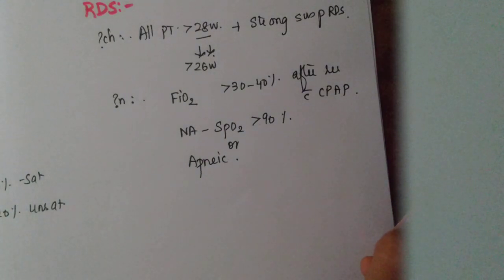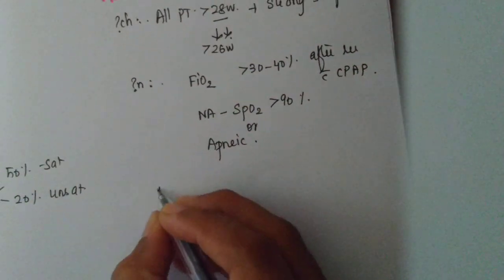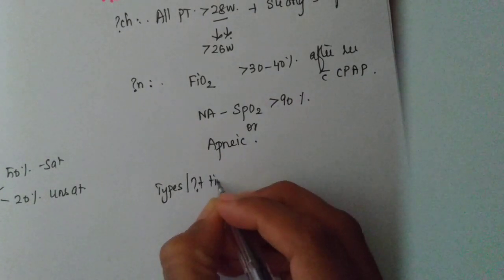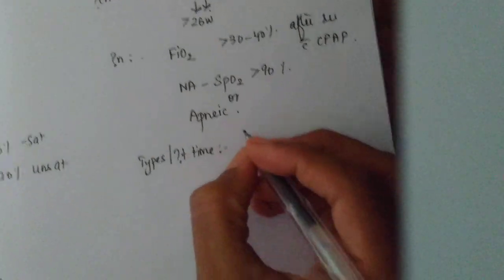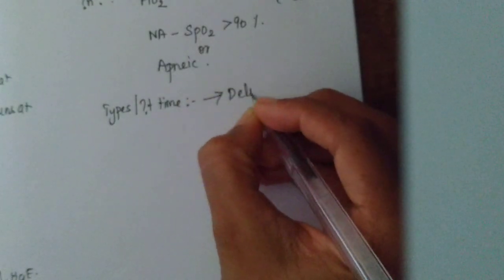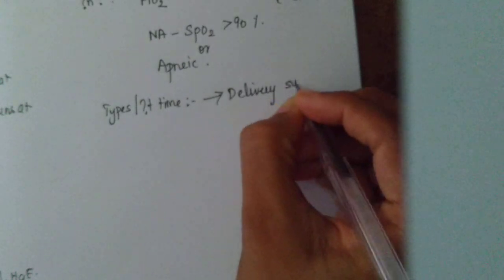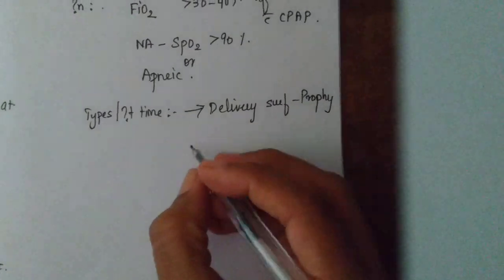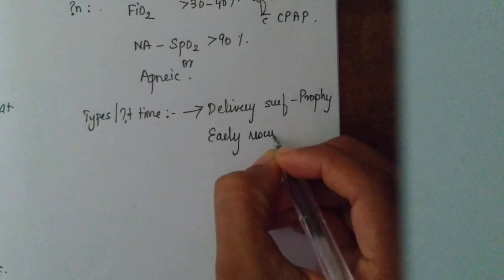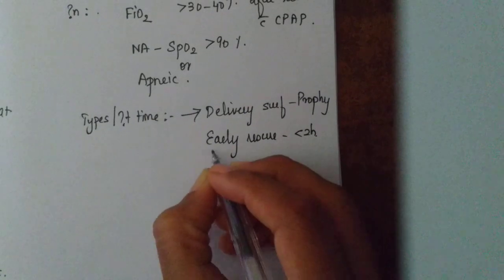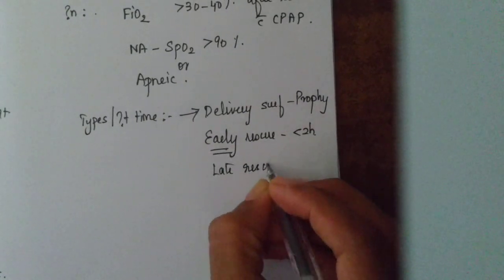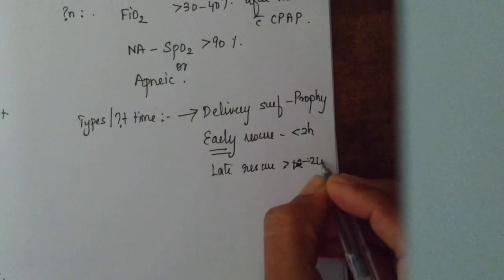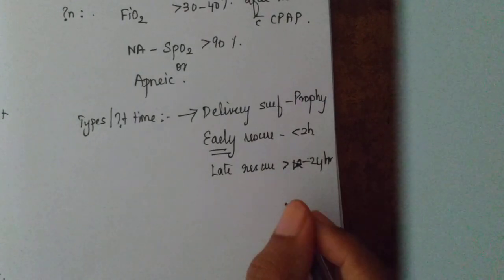So what are the types or depending upon what time you give it varies. One is delivery room surfactant prophylactically you give, efficacy still query. Next is early rescue, early rescue is within two hours, this is what is mostly being practiced. Late rescue is more than or say after 12 to 24 hours of birth, that is late rescue. Preferably give it in early rescue part.